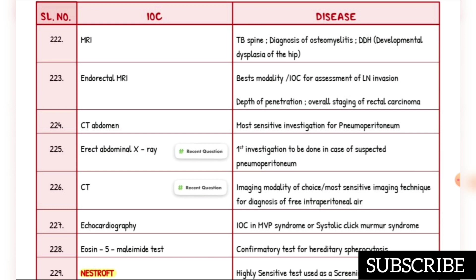Depth of penetration and overall staging of rectal carcinoma: investigation of choice is endorectal MRI. Most sensitive investigation for pneumoperitoneum is CT abdomen. First investigation in suspected pneumoperitoneum is erect abdominal X-ray. Most sensitive imaging technique for diagnosis of free intraperitoneal air is CT. Investigation of choice in MVP syndrome (systolic click murmur syndrome) is echocardiography.